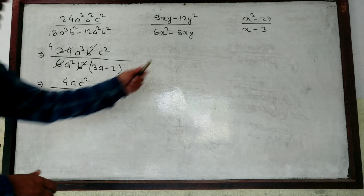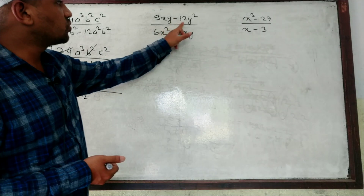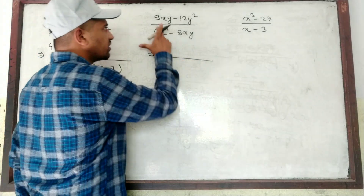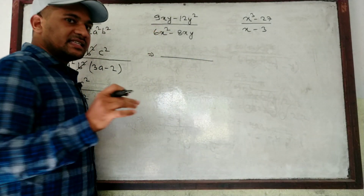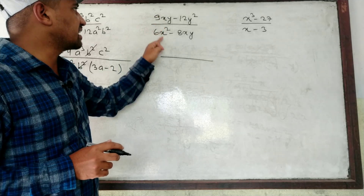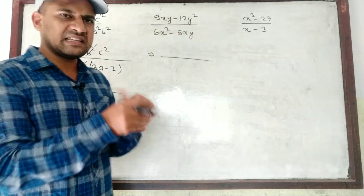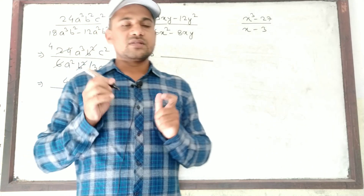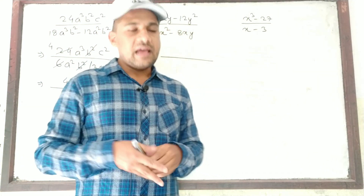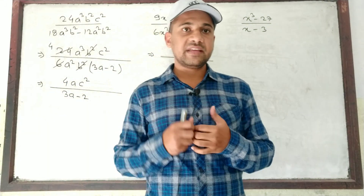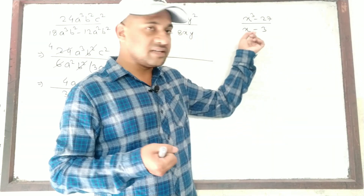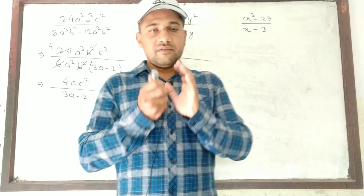Look at the next question: (9XY minus 12Y²) divided by (6X² minus 8XY). First we must take common factors. We cannot cancel directly — I have seen many students start canceling incorrectly, like crossing out 3 with 9, X with X, Y with Y. That is the wrong process. We must first take common, and then after that we can either use a formula or factorize.